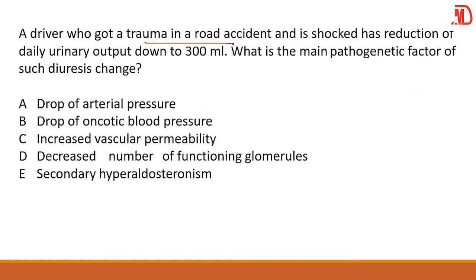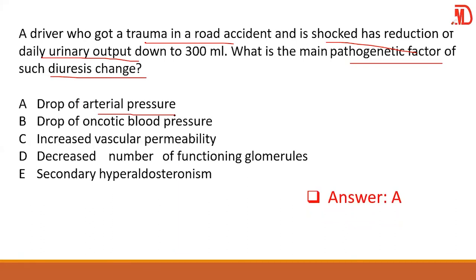A driver who got trauma in a road accident and is in shock has reduced urine output. What is the pathogenesis of reduced diuresis? Trauma can lead to shock with significant blood loss. Hydrostatic pressure is reduced due to a drop in arterial pressure — low blood pressure leading to shock means you cannot urinate more. The answer is A.